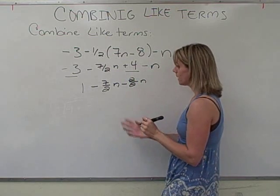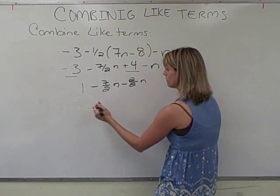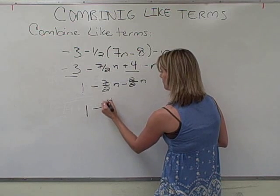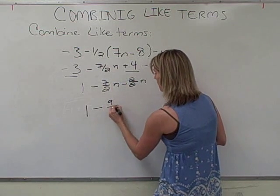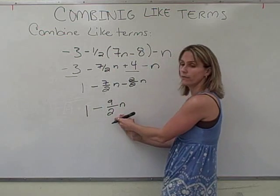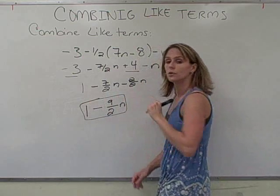Now we can combine these two fractions and these two like terms to get 1 minus 7 plus 2, which is 9, halves N. We have a constant, we have a variable term, they can't be combined, so we are done.